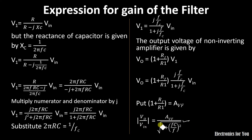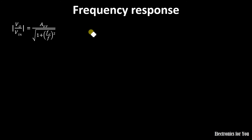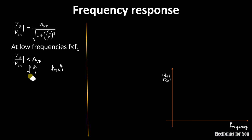Using this gain formula, we calculate the frequency response for the high-pass filter. As frequency increases from 0, the term FC/F decreases, so the denominator decreases and the gain approaches AVF — meaning as frequency increases, the pass-band gain increases. For zero frequency, we get no output, and as frequency increases we see an increasing gain.